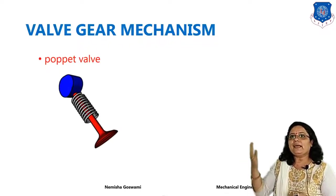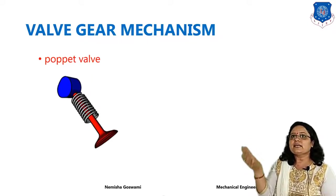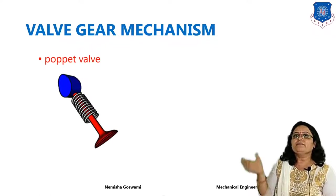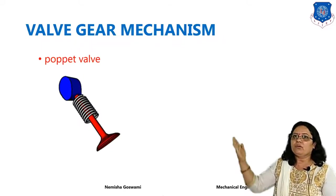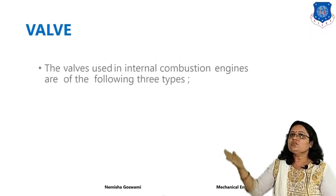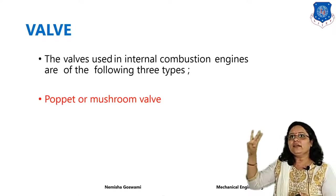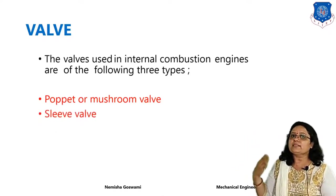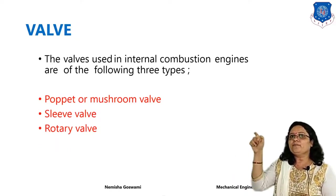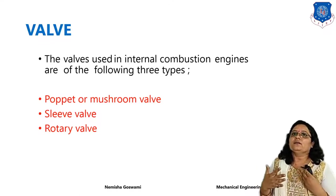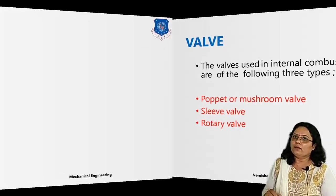Next is the poppet valve. We need to design the poppet, or mushroom valve. In IC engines, there are basically three types of valves: first is the poppet or mushroom valve, second is the slide valve, and third is the rotary valve. But generally we prefer the poppet or mushroom valve for practical applications, so we will design the poppet or mushroom valve.